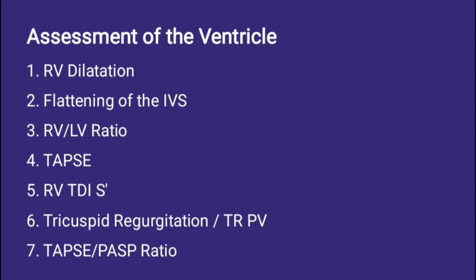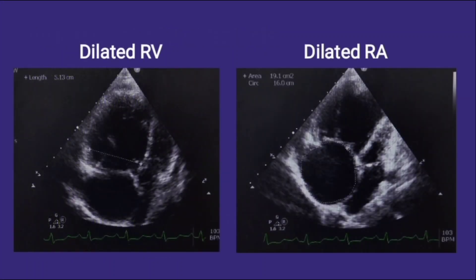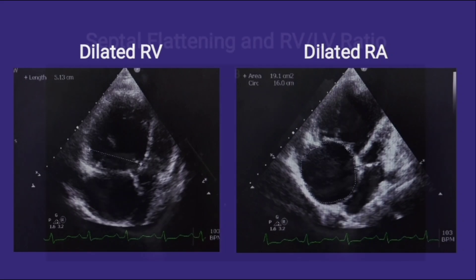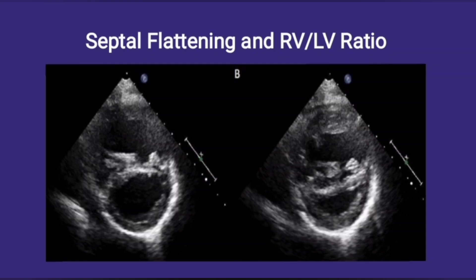The next step of assessment includes the ventricles. Parameters that confirm the presence of pulmonary hypertension include RV dilatation, septal flattening, RV/LV ratio, TAPSE, RV TDI S wave, tricuspid regurgitation, TAPSE, and PASP ratio — most measured in the four chamber view. The first two images show a dilated RA and RV. A diameter of more than 42 mm suggests a dilated RV, and an area of more than 17 cm² suggests a dilated RA.